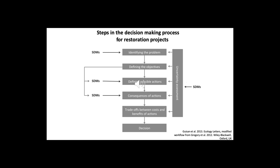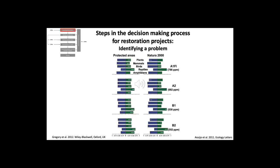For the first step of identifying a problem, ecological niche models can play a role — for example, by highlighting likely shifts of suitable habitat for a species and where restoration projects could be undertaken. For instance, a study in Ecology Letters used species distribution models to assess the effectiveness of protected areas and the Natura 2000 network in Europe. The model suggested that by 2080, about 58% of species would lose suitable habitat in protected areas, while losses affected about 63% of species of European concern occurring in Natura 2000 areas, thus identifying a problem.